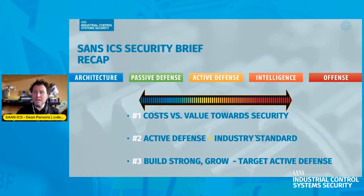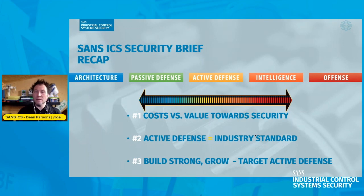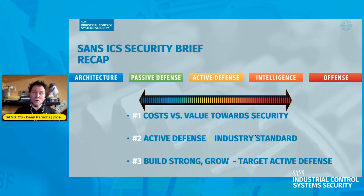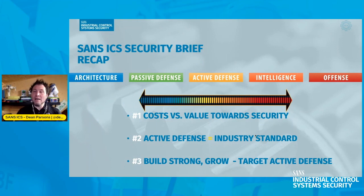To recap this SANS ICS security brief: the sliding scale of cybersecurity consists of architecture, passive defense, active defense, intelligence, and offense. You can consider the cost versus value toward security as you target and grow through one of these areas. Active defense is really the industry standard for industrial control systems today — that's where we should be, based on the threats we're actually facing for our utilities and other ICS areas. The idea is to build a strong foundation starting with architecture, then move to passive defense, and build at least to active defense — that should be your target.